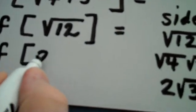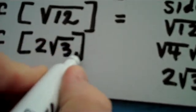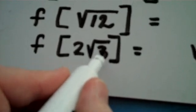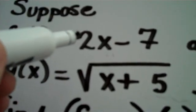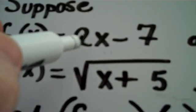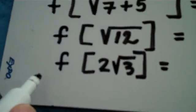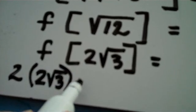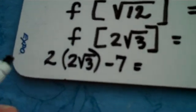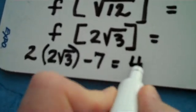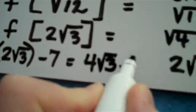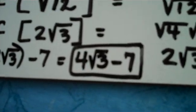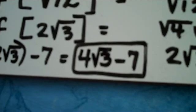So I'm finding f of 2 radical 3, which means I now go to function f, and I plug in 2 radical 3. Function f, which is a linear function, tells me to take 2 times the input minus 7. So in this case, we would take 2 times the input, which is 2 radical 3, minus 7. And 2 times 2 radical 3 would become 4 radical 3, and then we have the minus 7 at the end. Therefore, 4 radical 3 minus 7 is our final answer. Thank you.